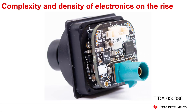As electronic systems get more sophisticated, diverse circuits are packed in close proximity to one another, improving the functionality and reducing the form factor of the eventual solution. Take the example of this compact camera module for automotive driver monitoring systems. It combines a 2-megapixel imager with a 4-gigabits-per-second serializer and 4-channel power management integrated circuit, all packed into a small form factor.